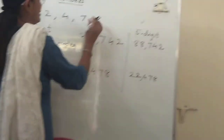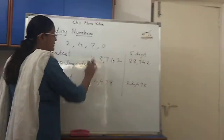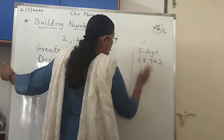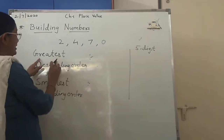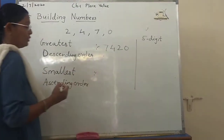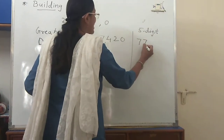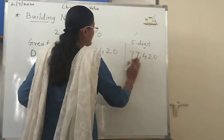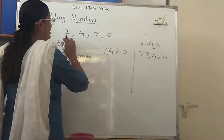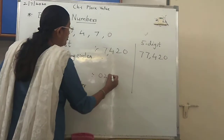Now, if instead of 8, you are given 0 — so the digits are 0, 2, 4, 7 — your answers will change. For the greatest number, descending order gives 7, 4, 2, 0 — so 7420 is the greatest number. For the 5-digit greatest, repeat 7: 7, 7, 4, 2, 0 — that is 77420. But when building the smallest number, you cannot write 0 in front.